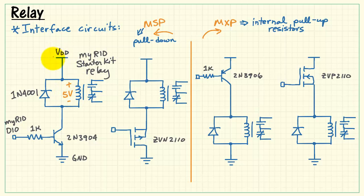Now, the MyRio starter kit relay specifically is a 5-volt coil. That means we need to attach it to the MyRio 5-volt supply.